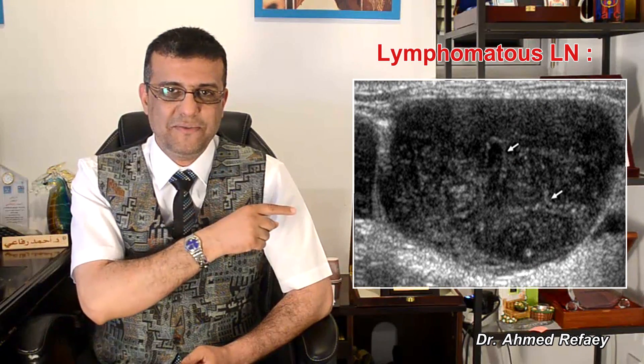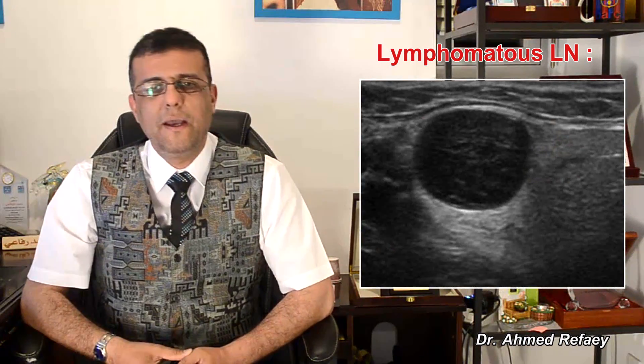On color Doppler sonography, both metastatic and lymphomatous lymph nodes usually show peripheral or mixed vascularity, as you see in these images. The presence of peripheral vascularity strongly suggests a malignant process in the lymph node.